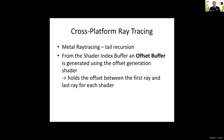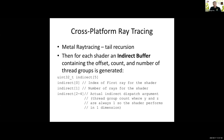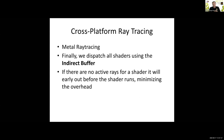From the shader index buffer, we can build an offset buffer. This buffer holds the offset between the first ray and the last ray for each shader. After that, we can build an indirect buffer that contains the information from the previous buffers — offset, count, and number of thread groups — which we call the indirect buffer. With that indirect buffer, we can dispatch all the shaders. If there are no active rays for a shader, it will early-out before the shader runs, minimizing overhead. This is the bird's-eye view on how we implemented tail recursion for Metal, so we get the same feature set for Metal that we also have for DXR and RTX.